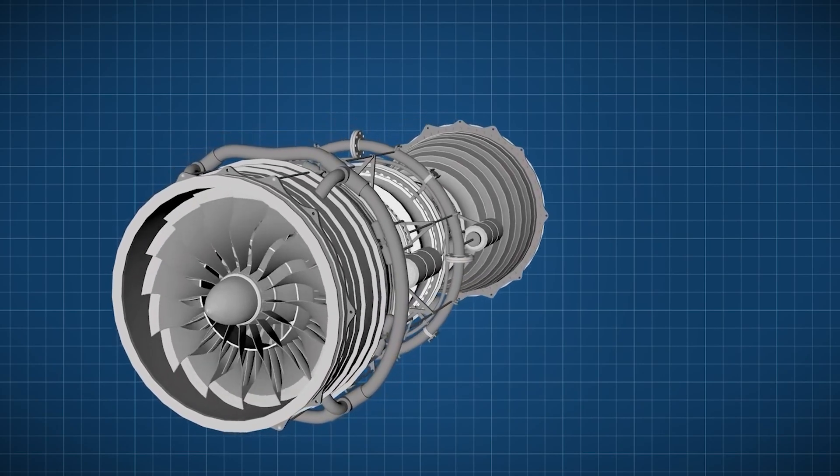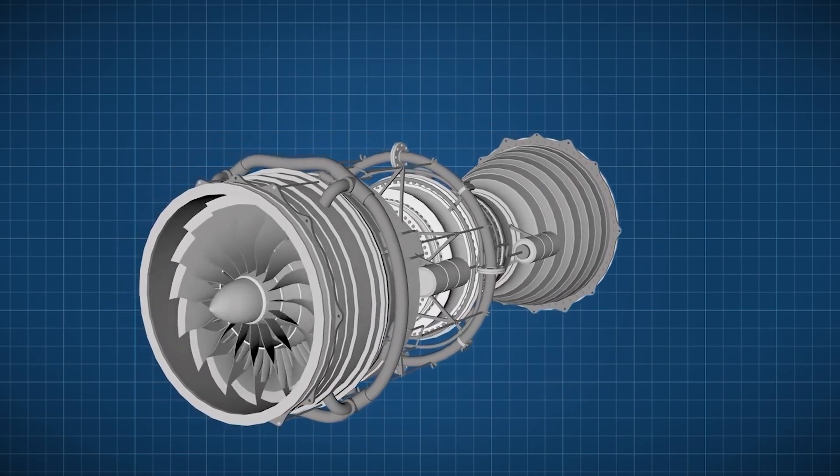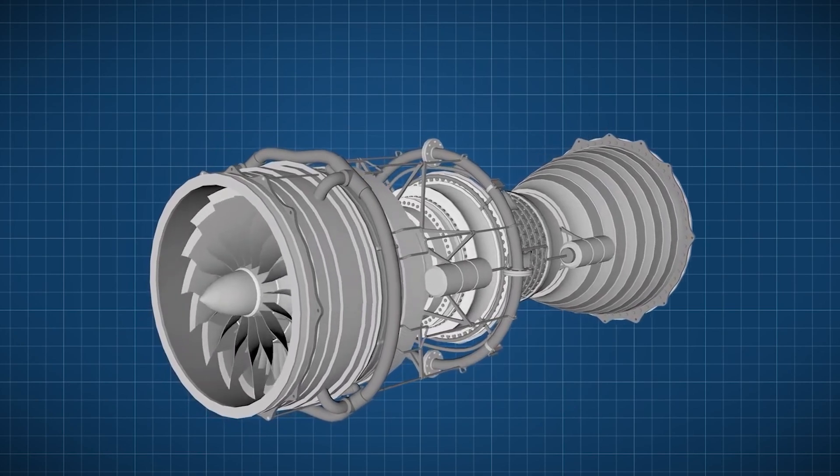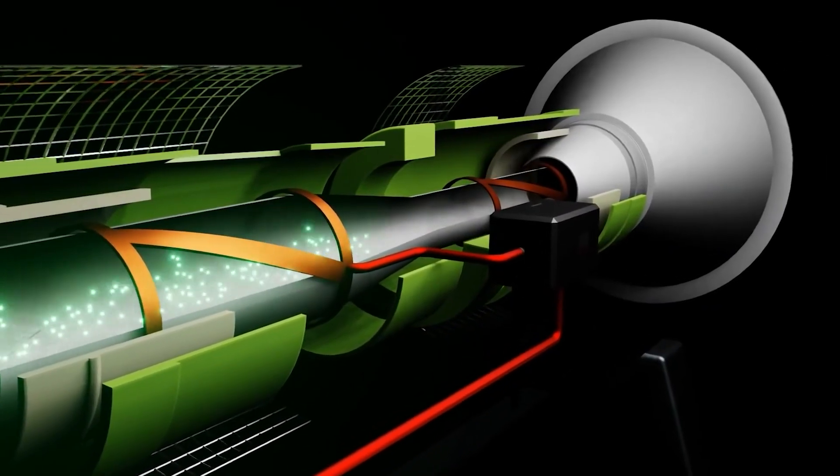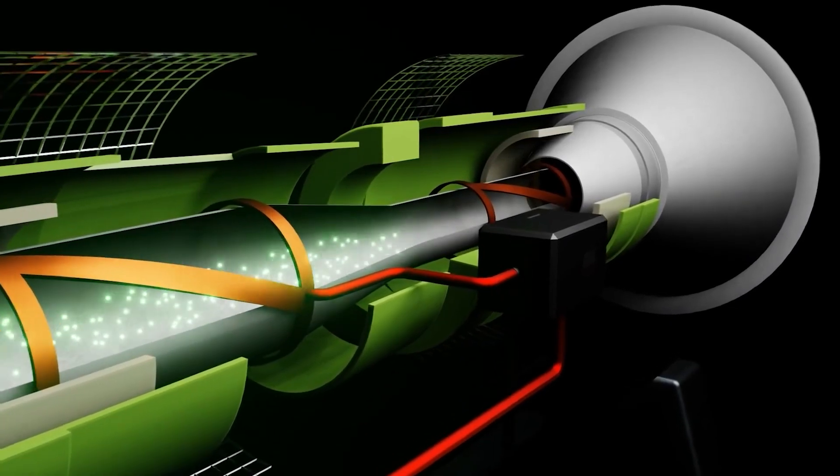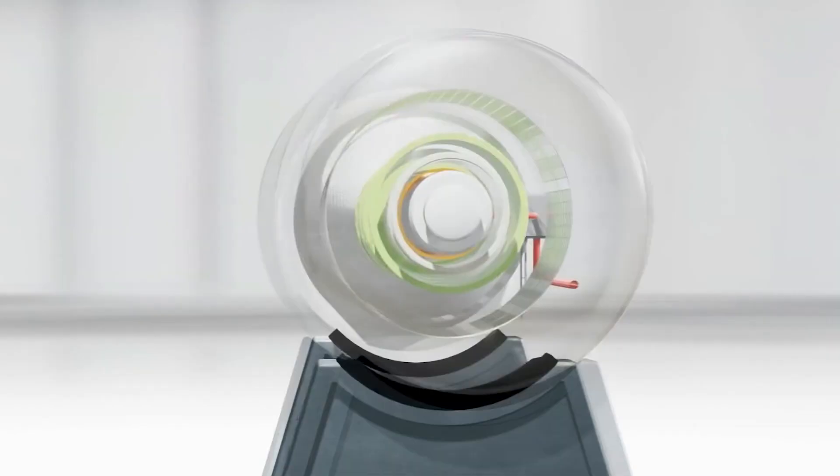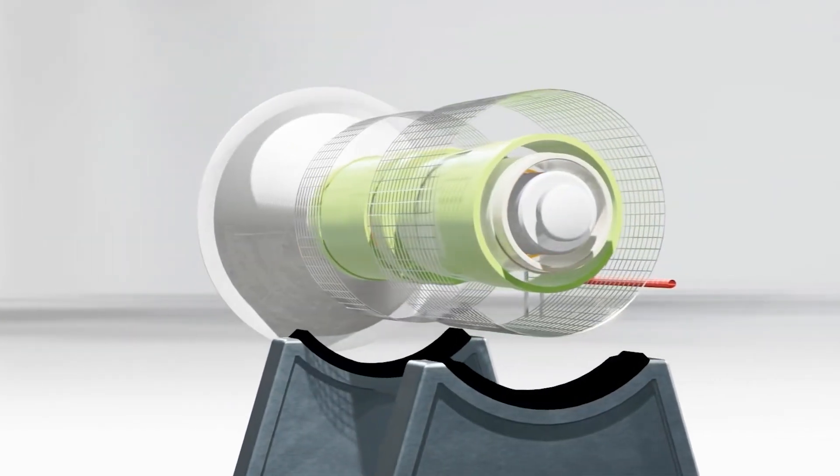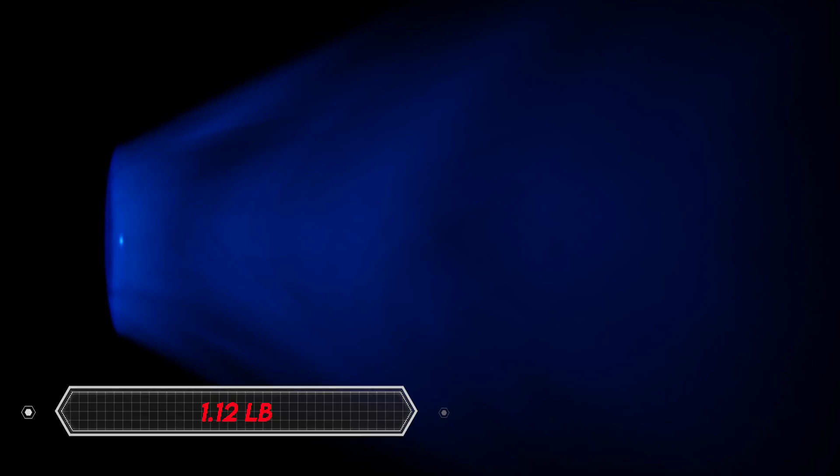However, scaling up this technology for regular plane engines poses challenges involving factors like airflow and microwave energy. Similar challenges are faced by variable-specific impulse magnetoplasma rocket, Vassimer, and electrothermal thrusters designed for spaceships. These systems demand a substantial 200 kilowatts of electrical power for a modest 1.12 lb thrust.